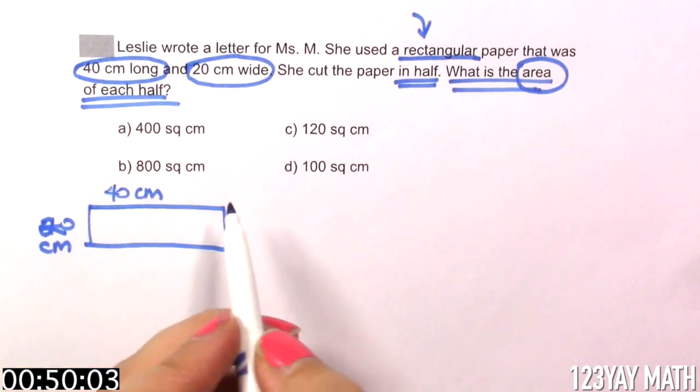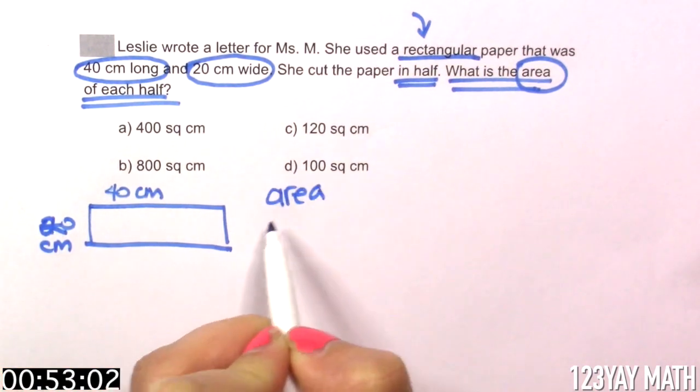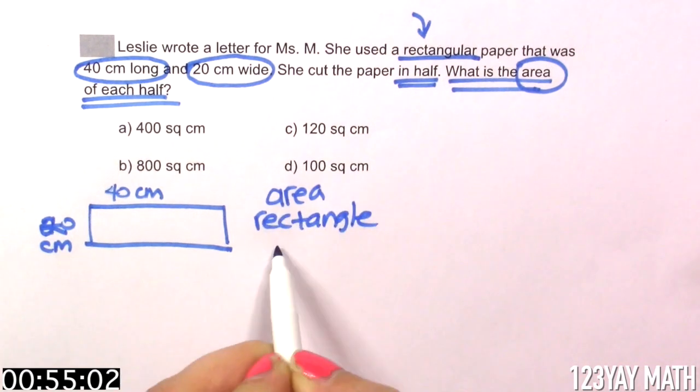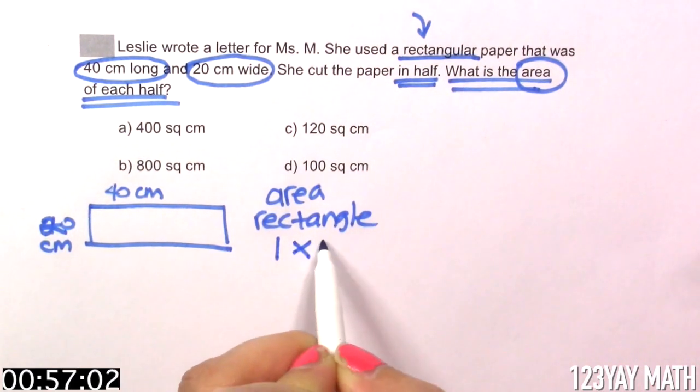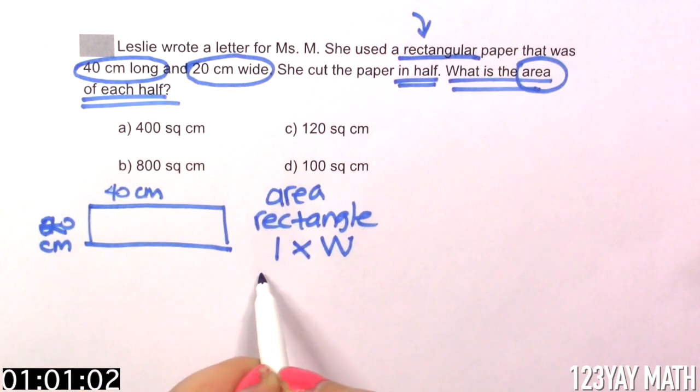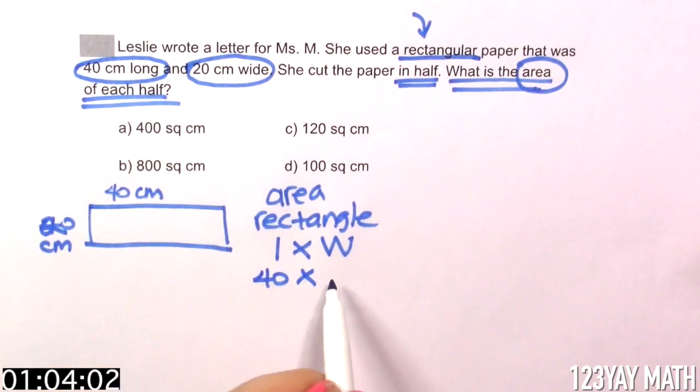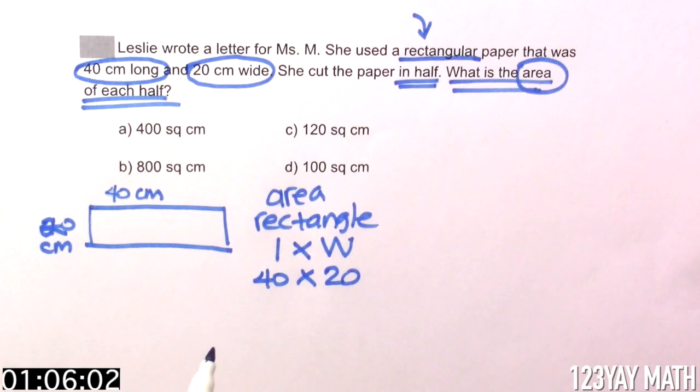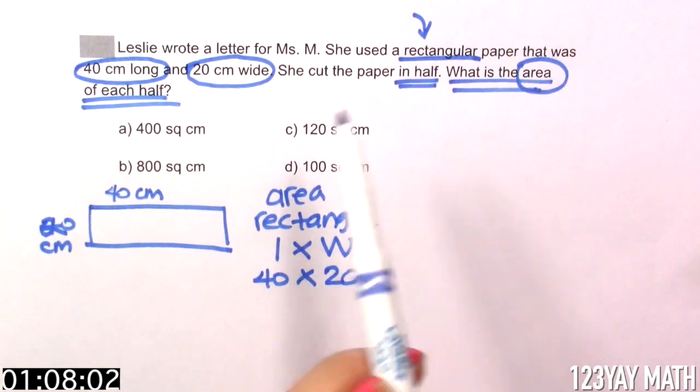Now, what is the formula for area? The area of a rectangle is length times width. Do we have the length? Yes, we do. It's 40 times width. Is this what they're looking for?